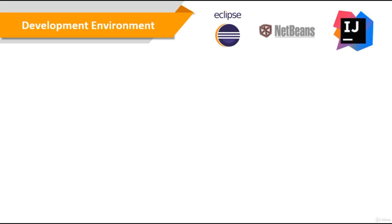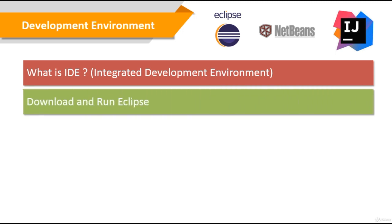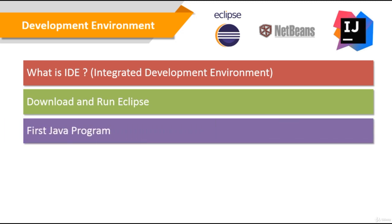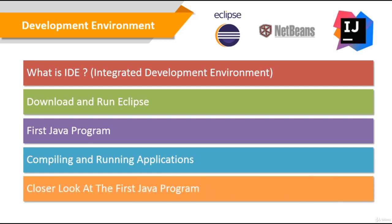In this section, we're going to learn about the Java development environment. First, we're going to learn what integrated development environments are. Then we're going to download and run Eclipse. Then we're going to write our first Java program using Eclipse. Then we're going to learn how to compile and run Java programs. And then we're going to review our first Java program and congratulate ourselves for doing a great job — well, the champagne's on you.